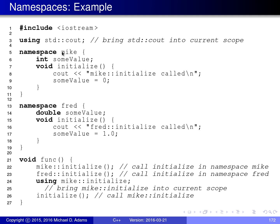There are two namespaces: one called Mike and another called Fred. In the namespace Mike, there is a variable called some_value of type int. In the namespace Fred, there is a variable with the same name, some_value, but of type double. Because these two variables are in different namespaces — separate scopes — the names don't conflict. Both namespaces also contain a function called initialize, which takes no parameters and returns void. Although these functions have the same signature, they don't conflict because they are defined in different namespaces.